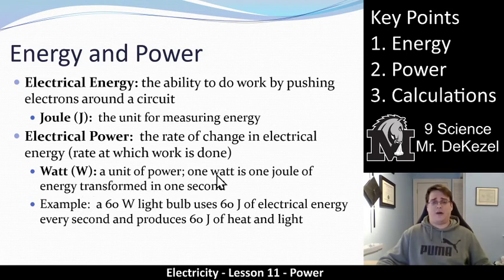A watt is a unit of power. One watt is one joule of energy in one second. So a 60 watt bulb uses 60 joules of energy every second and produces 60 joules of heat and light. Energy can be measured in a circuit or in heat or in light. It is just a measure of energy. A 60 watt bulb produces 60 joules of energy every single second. A 100 watt bulb would produce 100 joules of energy.